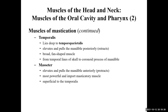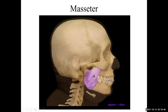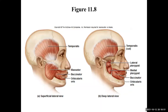Temporalis is on the parietal and temporal bone on the lateral portion of your skull and attaches onto the coronoid process of the mandible. Masseter is the powerful, very powerful muscle of mastication. You also have other muscles of mastication — the lateral and medial pterygoids — which are responsible for the side-to-side grinding motion.